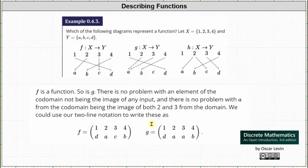It can be helpful to write these function rules using two-line notation. For function f, the elements one, two, three, and four appear in the first row, and in the second row we have the corresponding outputs: one maps to d, two maps to a, three maps to c, and four maps to b. For function g, the first row is the same, but now one maps to d, two maps to a, three maps to a, and four maps to b.